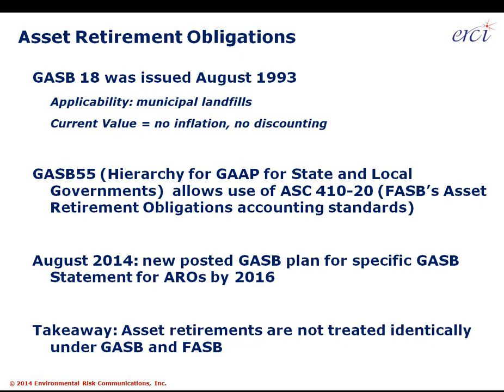In the public sector it's been hit or miss so far. GASB 18, which predates GASB 49 by 13 years, was issued in August of 1993. It applies just to municipal landfills — purposefully — to identify the long-term closure costs and post-closure care costs for municipal landfills reaching the end of their useful life. It was based on calculating the current value without inflation or discounting of those long-term costs and putting them on the balance sheet. GASB 18 is the only item currently covering asset retirement obligations specifically.